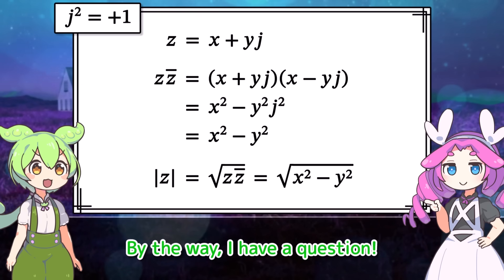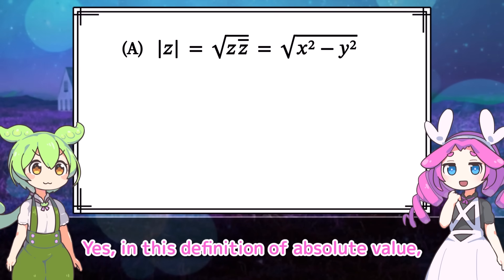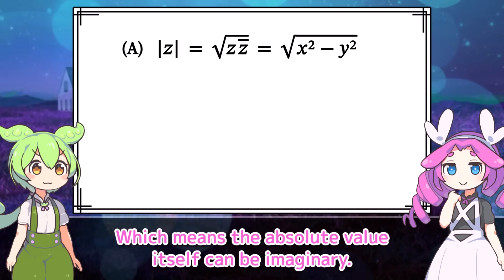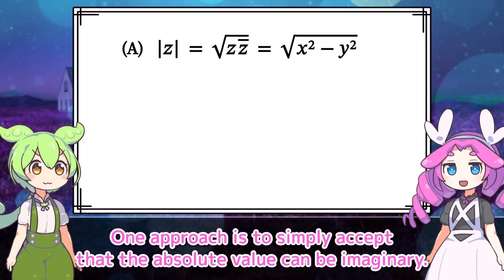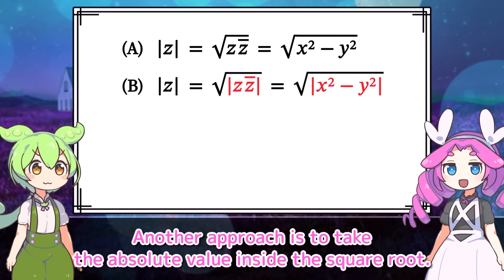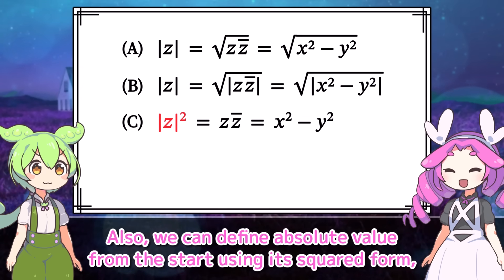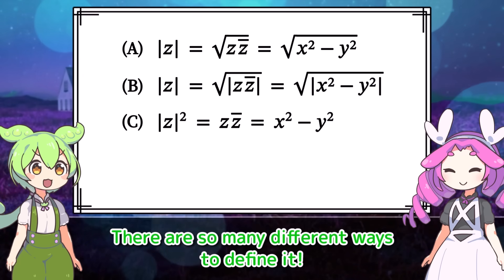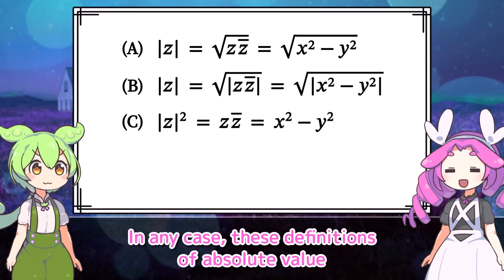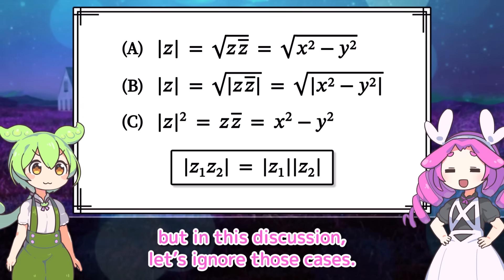In this definition of absolute value, the value inside the square root can be negative, which means the absolute value itself can be imaginary. Because of this, there are different approaches: one is to simply accept that the absolute value can be imaginary; another is to take the absolute value inside the square root so it's always non-negative. We can also define absolute value using its squared form, or consider the squared value itself as the absolute value. All these definitions satisfy the multiplicative property.